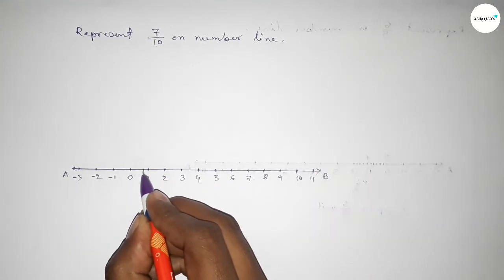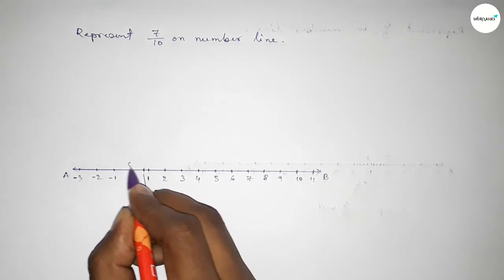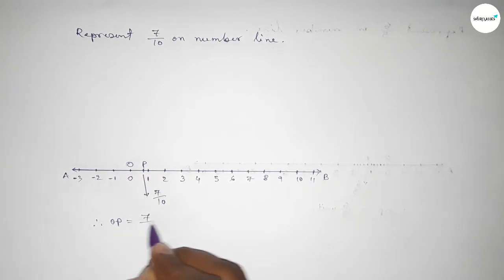So this is 7 over 10 on the number line, and O and P, so therefore OP equals 7 over 10 unit.